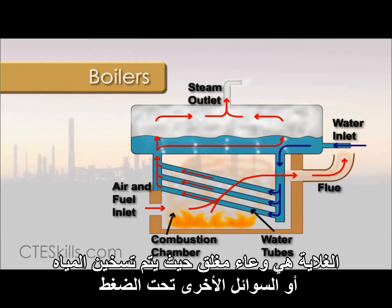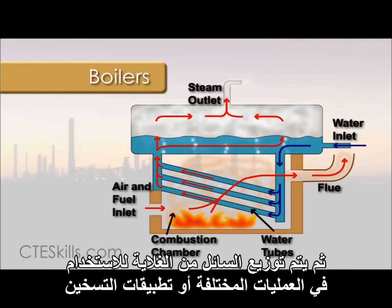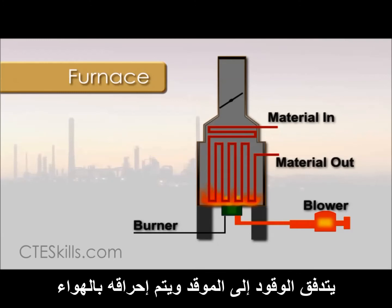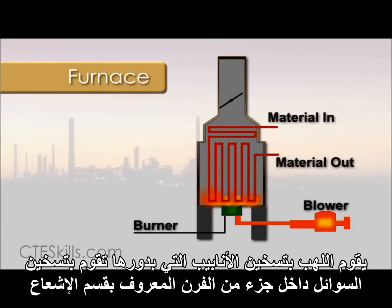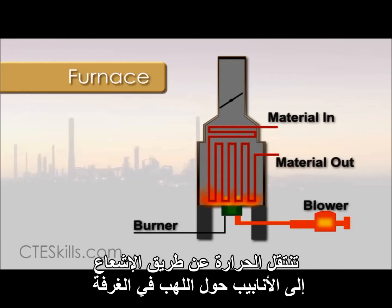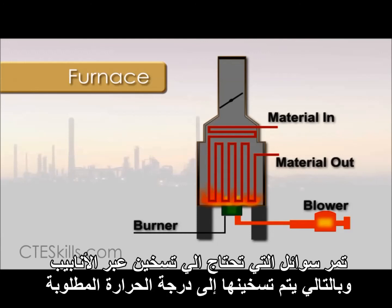A boiler is a closed vessel in which water or other fluids are heated under pressure. The fluid is then circulated out of the boiler for use in various processes or heating applications. A furnace is used to heat up raw materials in order to produce a particular product. Fuel flows into the burner and is burnt with air provided from an air blower. The flames heat up the tubes, which in turn heat the fluid inside the part of the furnace known as the radiant section. In the chamber where combustion takes place, known as the firebox, the heat is transferred mainly by radiation to tubes around the fire in the chamber. The heating fluid passes through the tubes and is thus heated to the desired temperature.